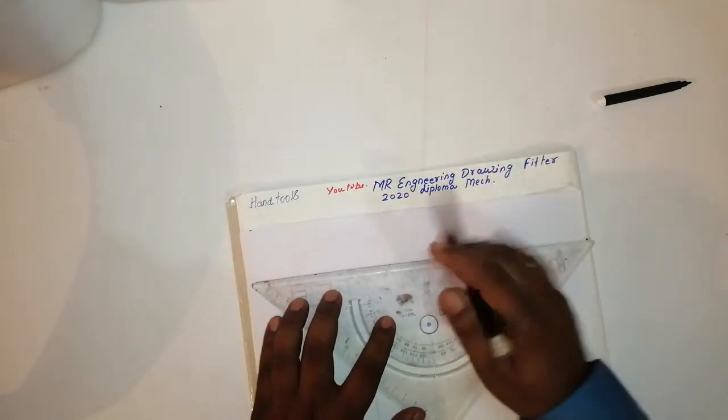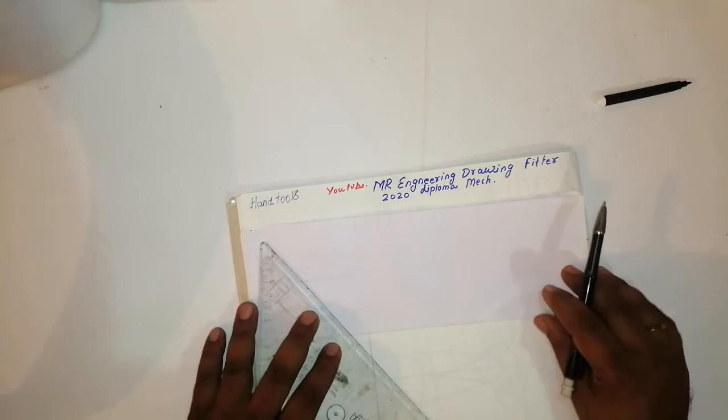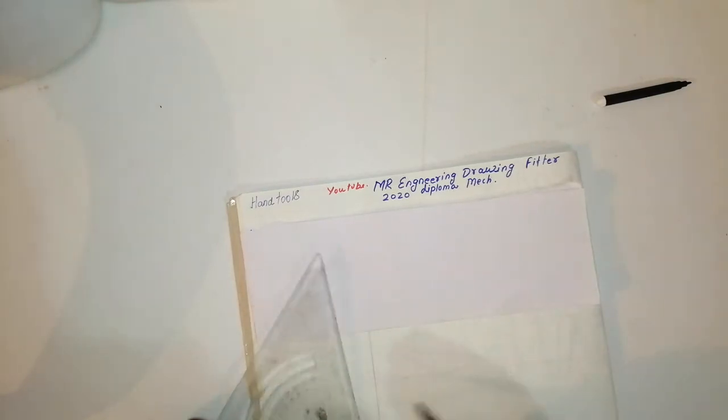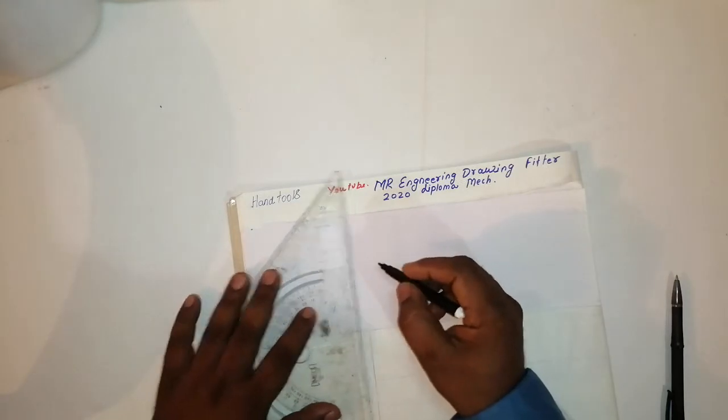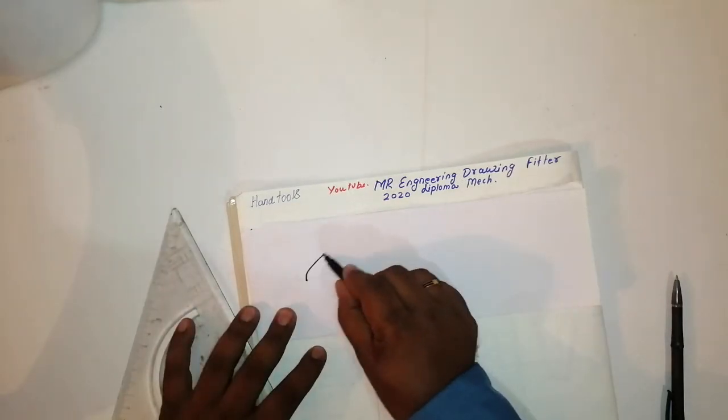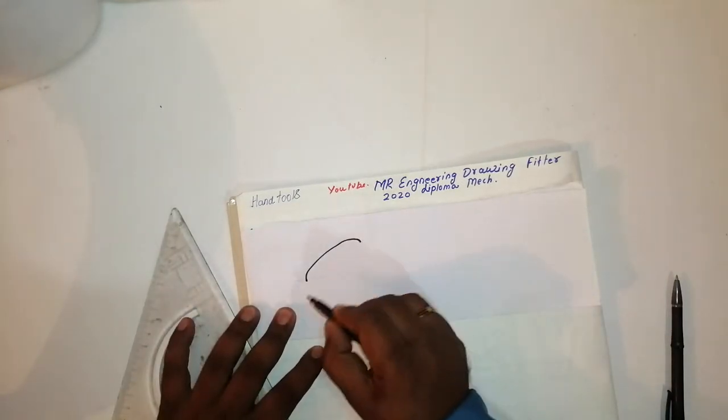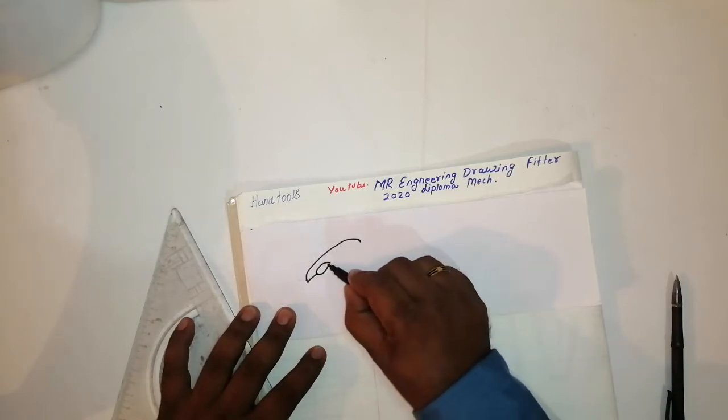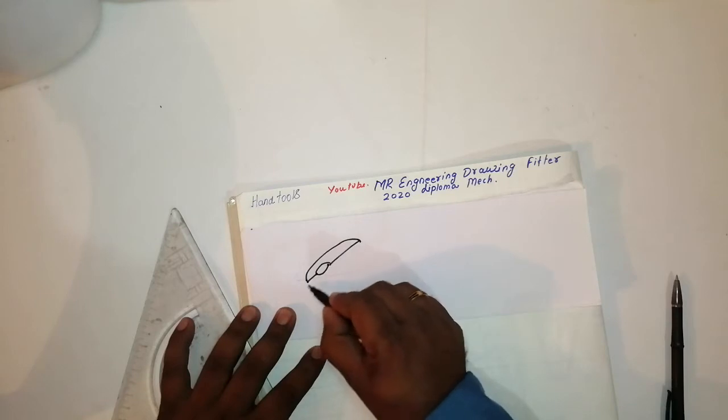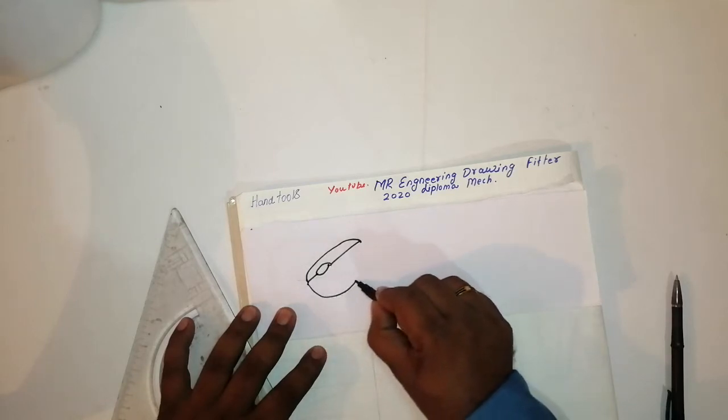Like this, and like this, and then this line. After that, take one curve like this. After the curve, take one slant line like this and like this. Then join this line.